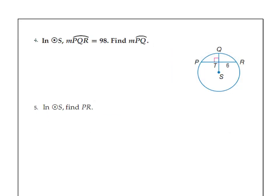Number four. In circle S, the measure of arc PQR equals 98. Find the measure of arc PQ. Well, since this right here is perpendicular to this, it's going to cut this arc in half. So if the whole arc was 98, to get PQ, we're going to take 98 divide by 2, which is 49 degrees. That would be the measure of arc PQ.